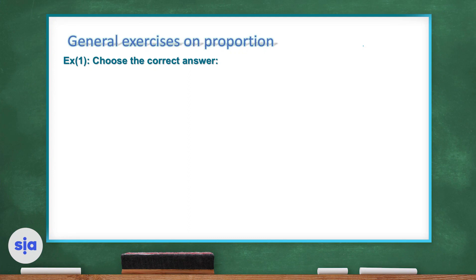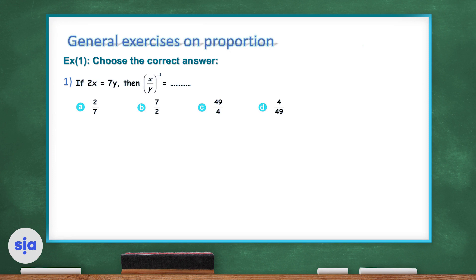Example one. The question is asking you to choose the correct answer. Let's check the first question. If 2x equals 7y, then what is x over y all to the power of negative one? Since 2x equals 7y, then x over y equals 7 over 2.